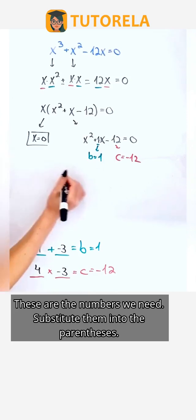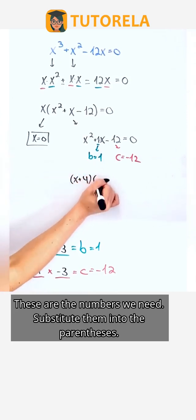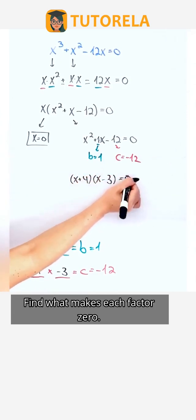These are the numbers we need. Substitute them into the parentheses. Find what makes each factor zero.